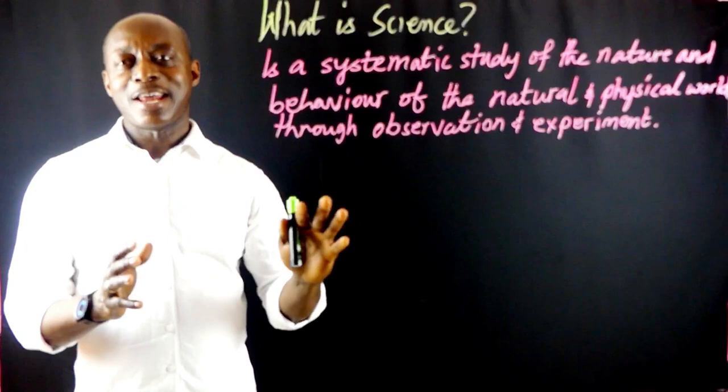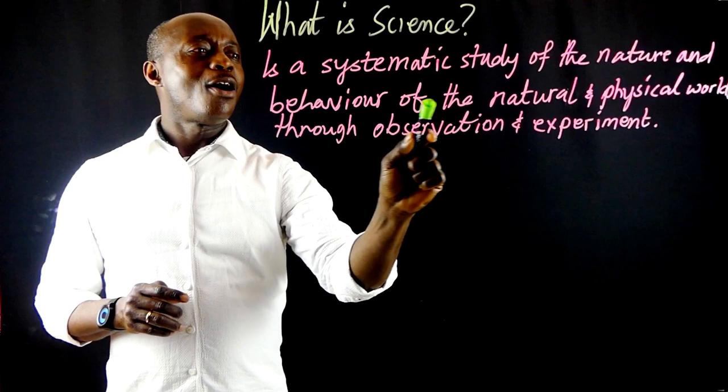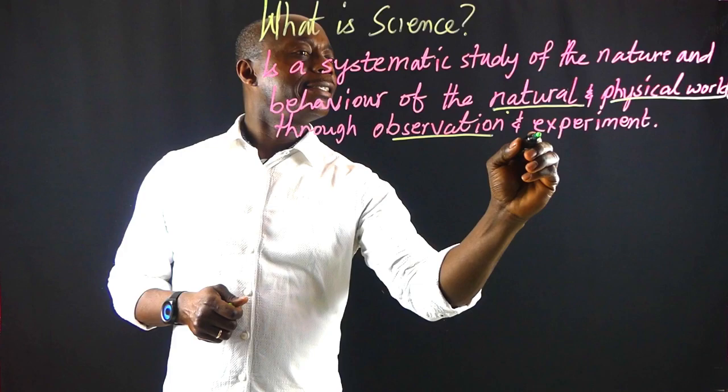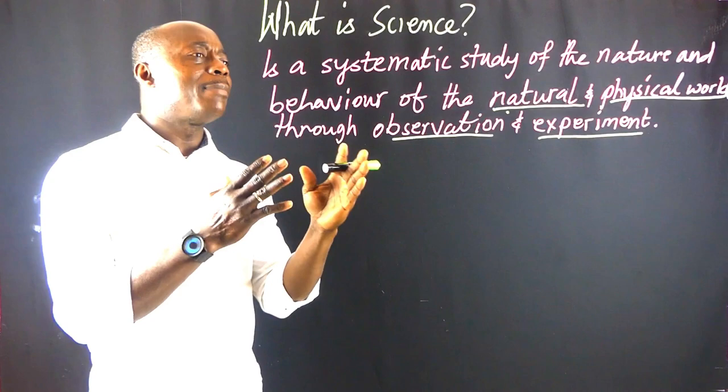So science is a systematic study of the nature and behavior of the natural and physical world through observation and experiment. Now let us explain further — what do we mean by natural world, and what do we mean by physical world?